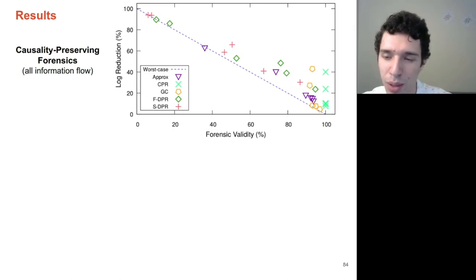Lastly, if we plot LogApprox, we're able to get fairly high reduction rates compared to LogGC and causality-preserving reduction. However, we see a loss in forensic validity. This is because LogApprox actively attempts to remove information it believes is repetitive or commonplace. This is information that causality-preserving forensics cares about.